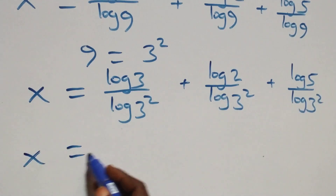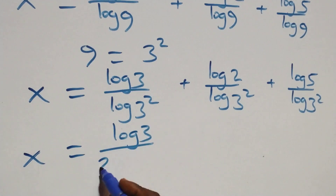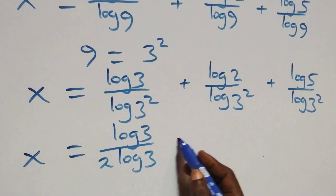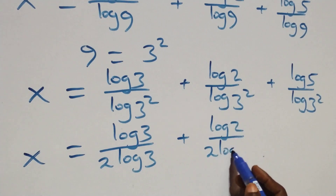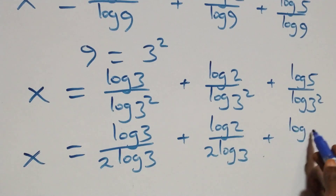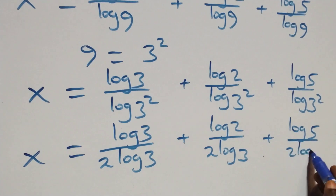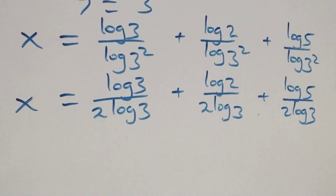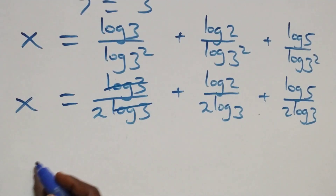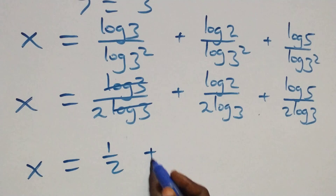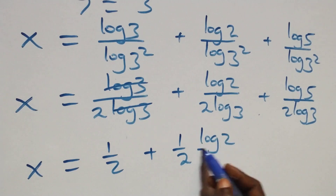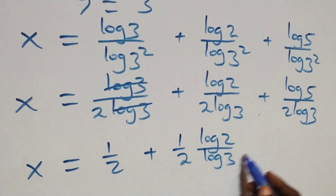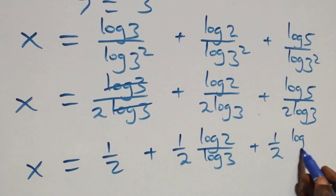We apply the power law of logarithm to the denominator — since 9 equals 3 squared, the 2 comes out front. We have x equals to log 3 over 2 log 3, plus log 2 over 2 log 3, plus log 5 over 2 log 3. Here, log 3 cancels, leaving 1 over 2. So x equals to 1 over 2, plus 1 over 2 times log 2 over log 3, plus 1 over 2 times log 5 over log 3.